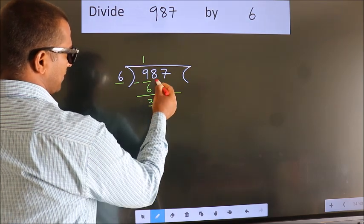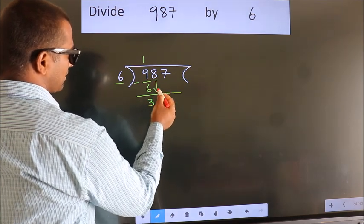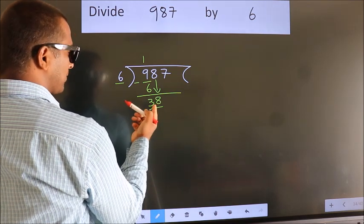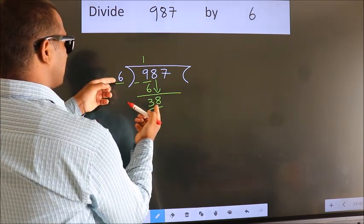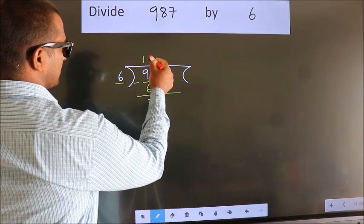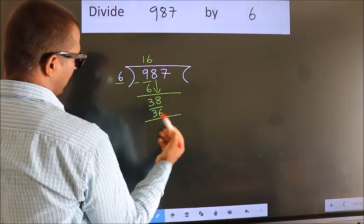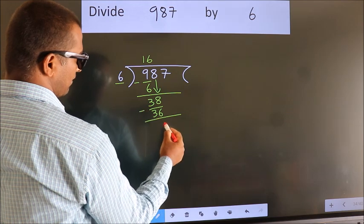After this, bring down the beside number. So 8 down, so 38. A number close to 38 in the 6 table is 6 sixes, 36. Now we subtract. We get 2.